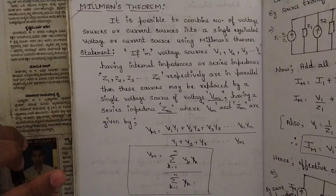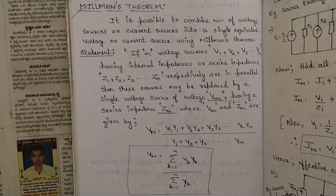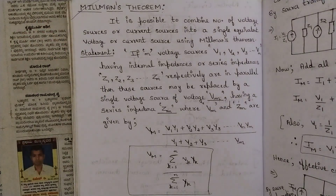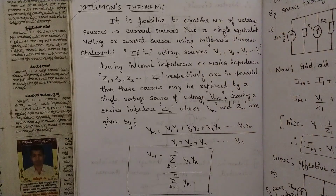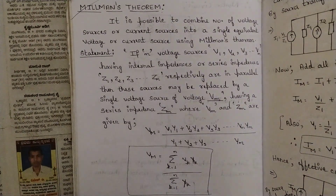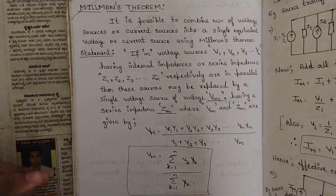You can study with your friends as well. So like this we have covered three theorems. This is the fourth theorem and a very easy theorem — nothing much here. It is similar to what we have done with source transformations; that concept will be coming here.